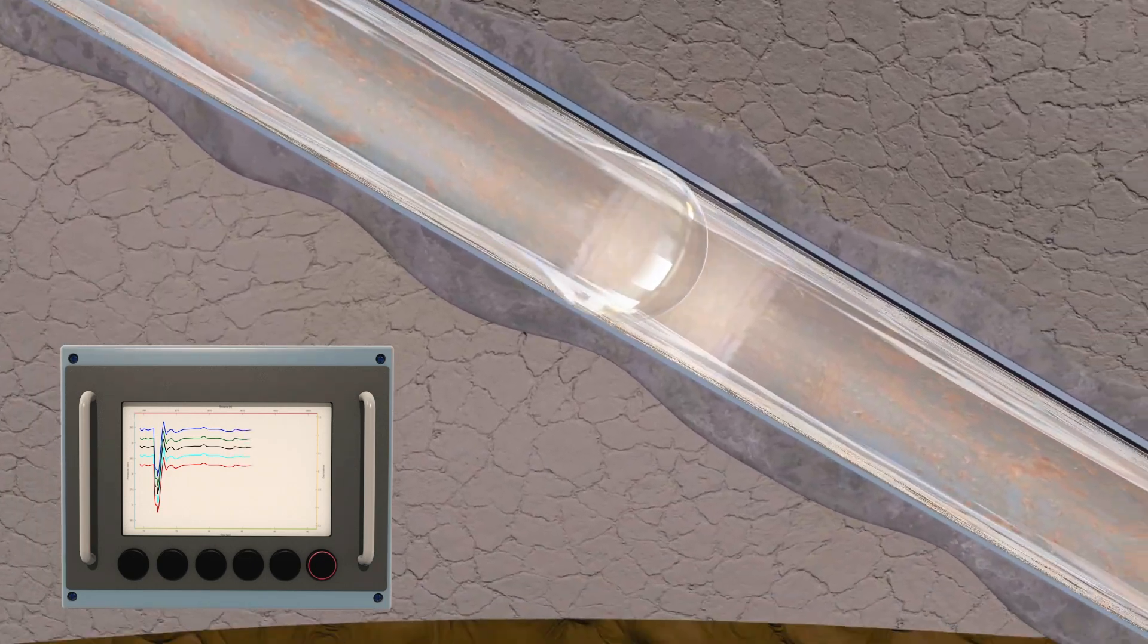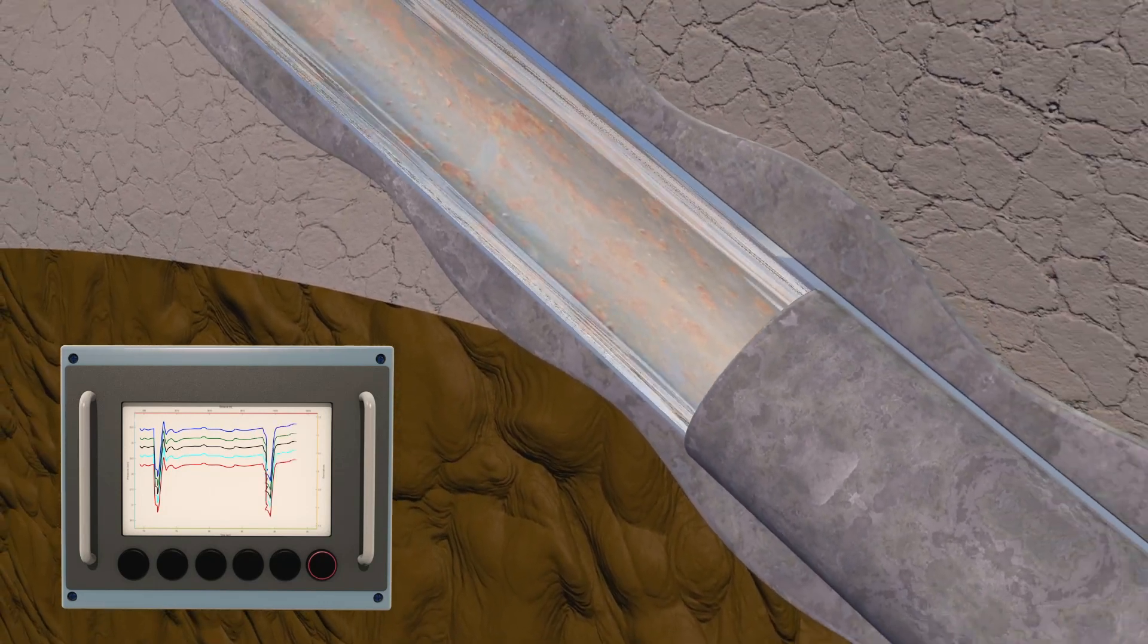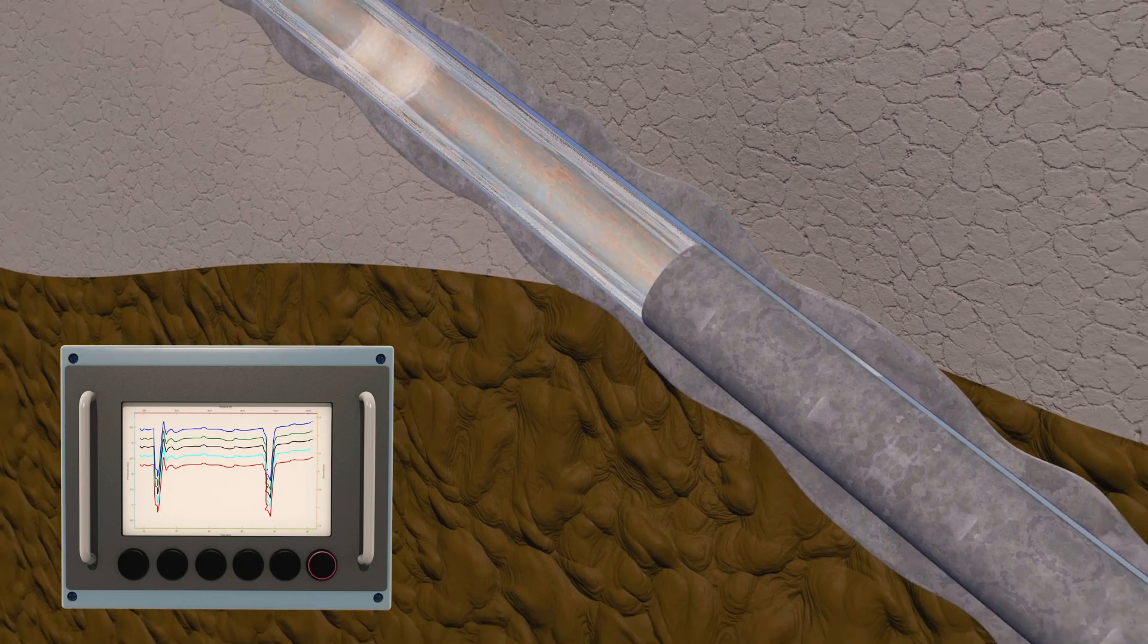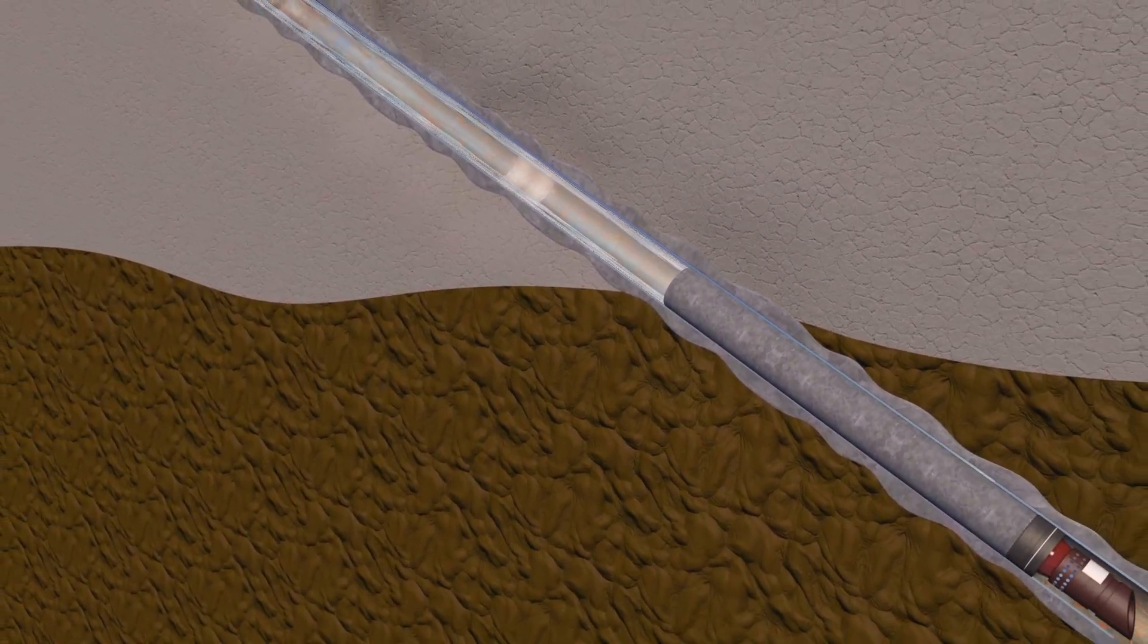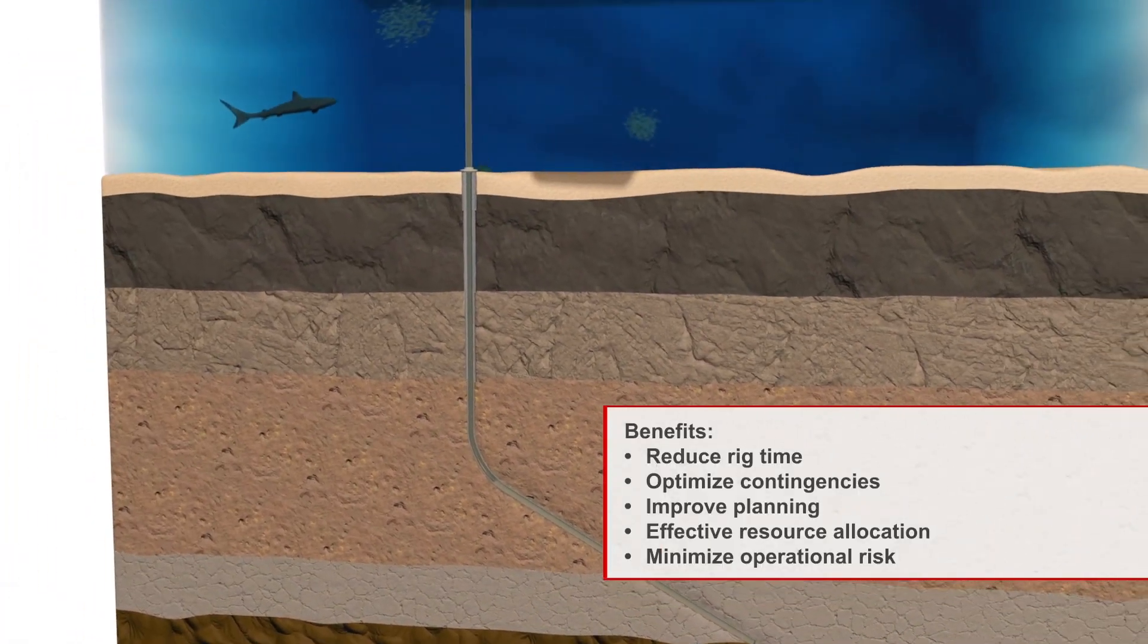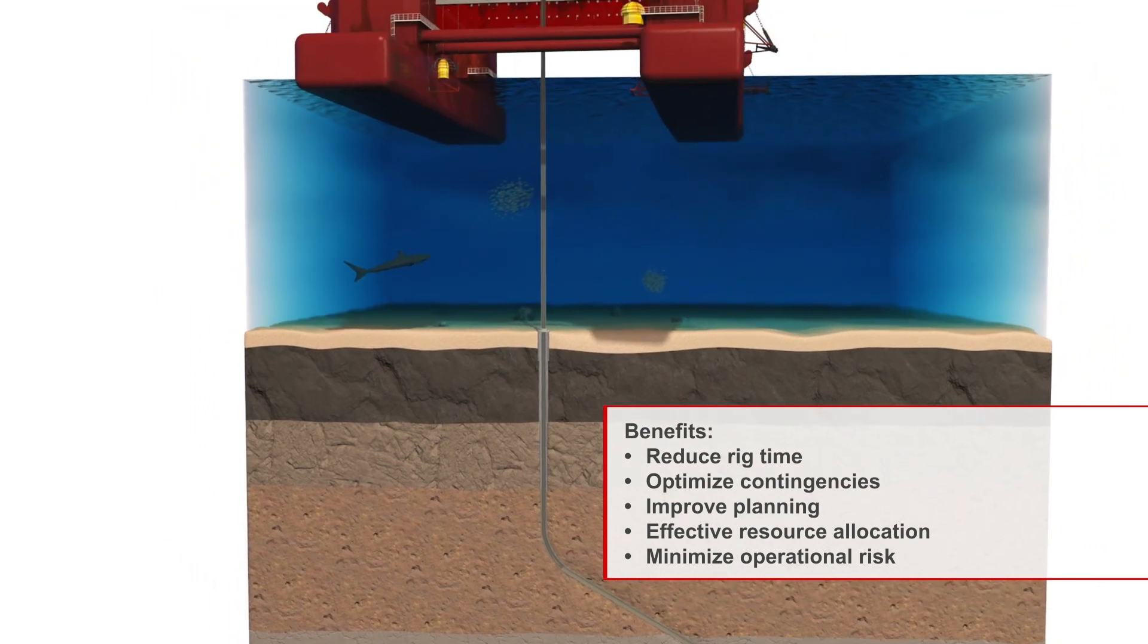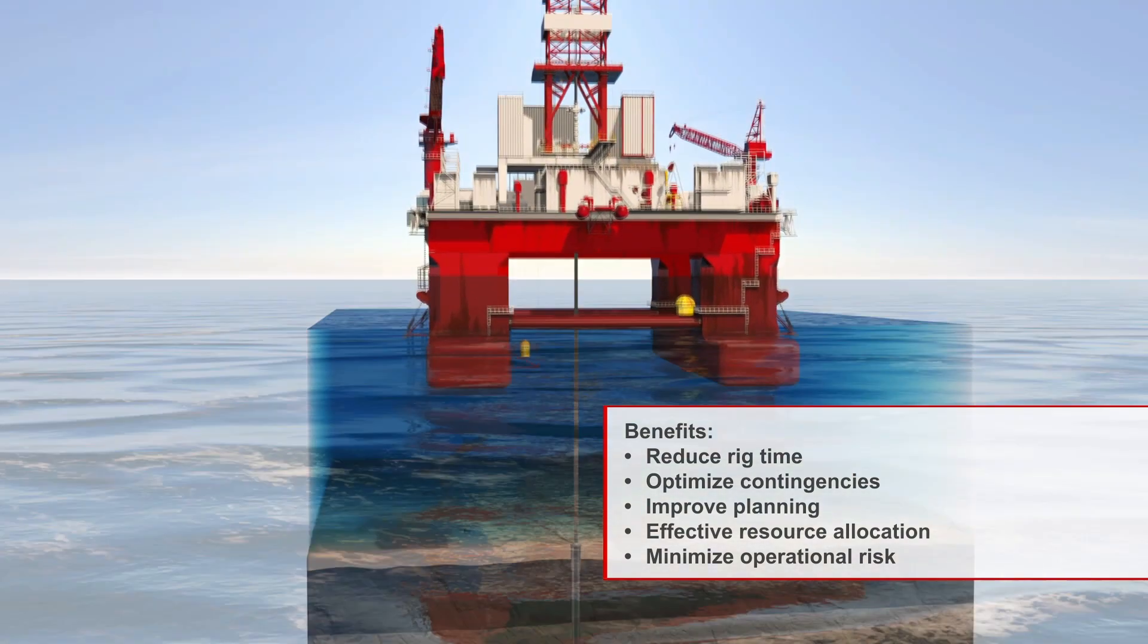The time of flight corresponds to distance in the wellbore. Data is collected within minutes, allowing fast identification of the blockage or restriction with rig time reductions of up to 24 hours compared to a physical hard tag. This is a major benefit to well intervention and P&A campaigns, with a focus on optimizing planning, contingencies, and resource allocation while minimizing operational risk and lost in hole time.